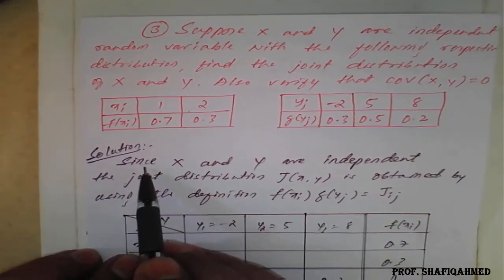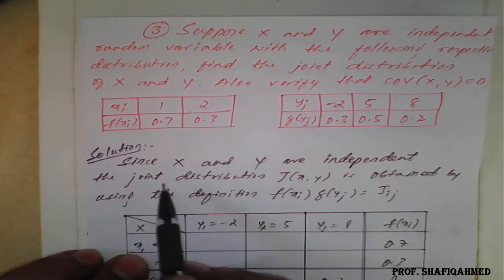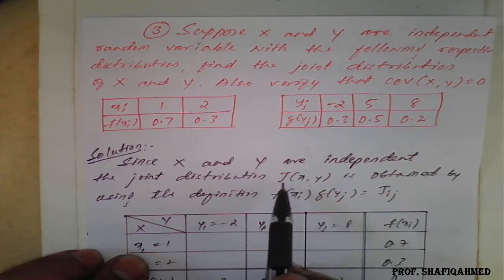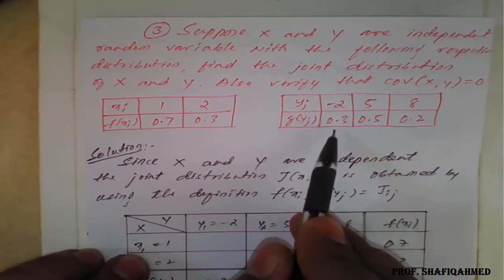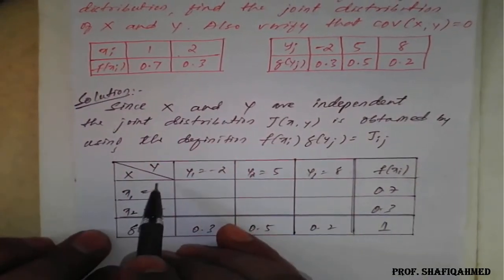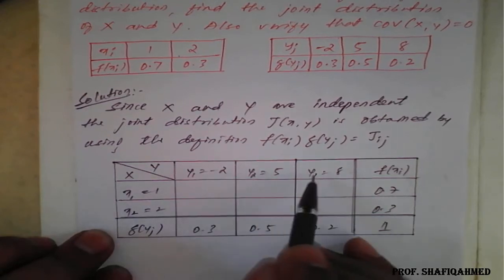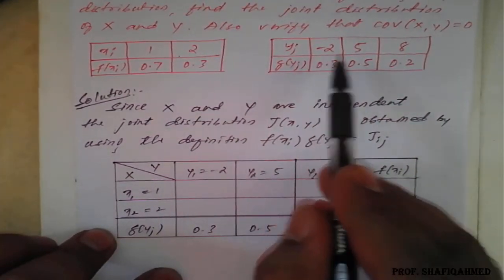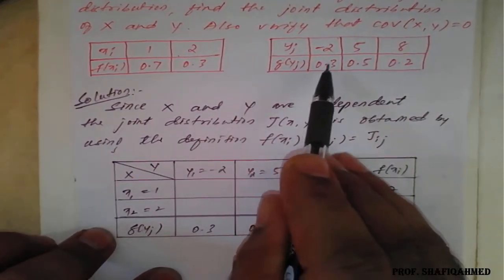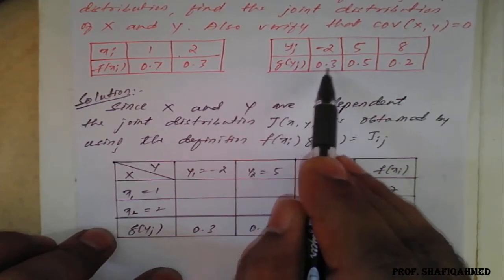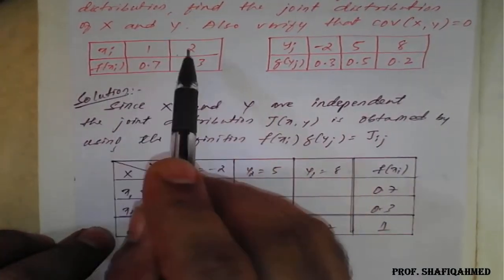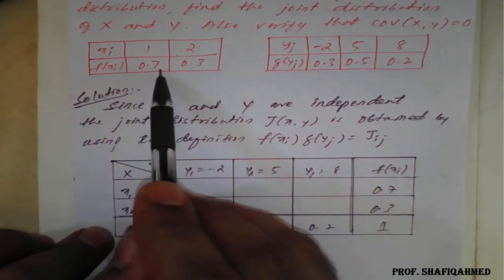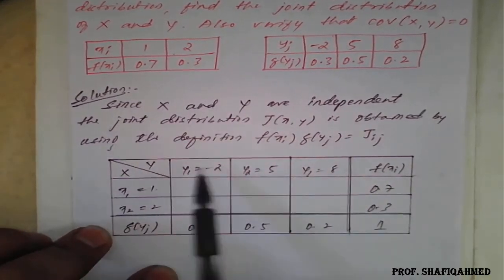Since x and y are independent, the joint distribution j(x, y) is obtained using the definition: j(xi, yj) = f(xi) · g(yj). I have prepared a table with y values minus 2, 5, 8 and the corresponding g(y) values 0.3, 0.5, 0.2. For x, the values are 1 and 2, with f(x) values 0.7 and 0.3 respectively — these are given in the question. In the middle part we need to fill in j11, j12, j13, j21, j22, and j23.